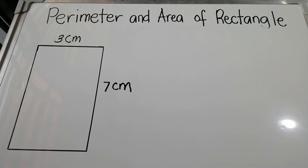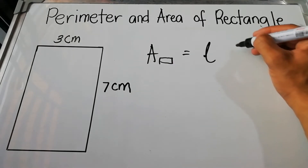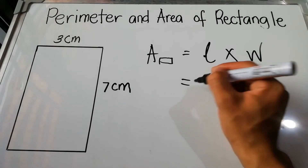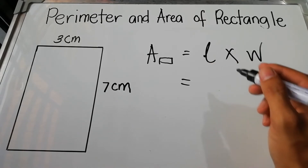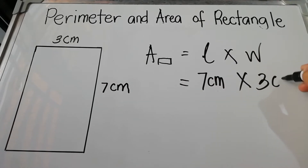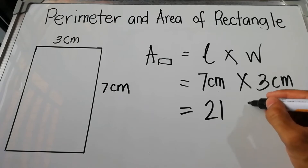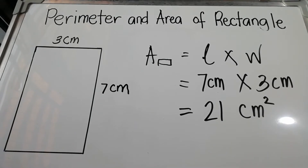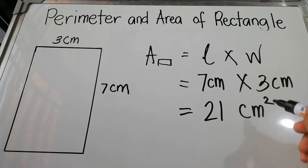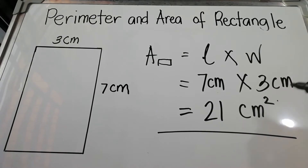For the area of the rectangle, we just multiply the length and width. Area of rectangle equals length times width. Substituting the values: 7 centimeters times 3 centimeters equals 7 times 3 = 21. Take note: centimeters times centimeters equals square centimeters. We read 'square' first before the unit, so the final answer is 21 square centimeters.